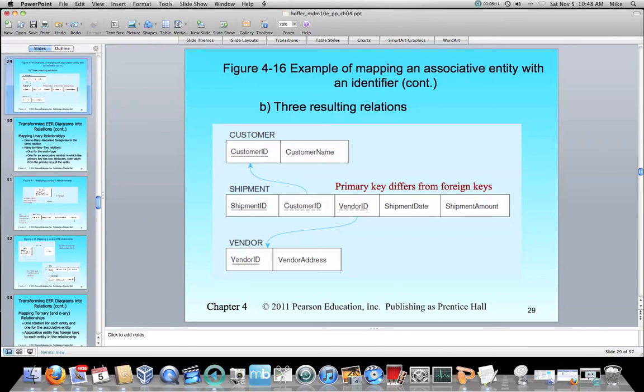Here we've got shipment ID. The primary key is going to be shipment ID. We're still going to have customer ID and vendor ID. Now the combination of customer ID and vendor ID would be, remember, a candidate key. It could be the primary key, but in this case we're simply not using it as the primary key.